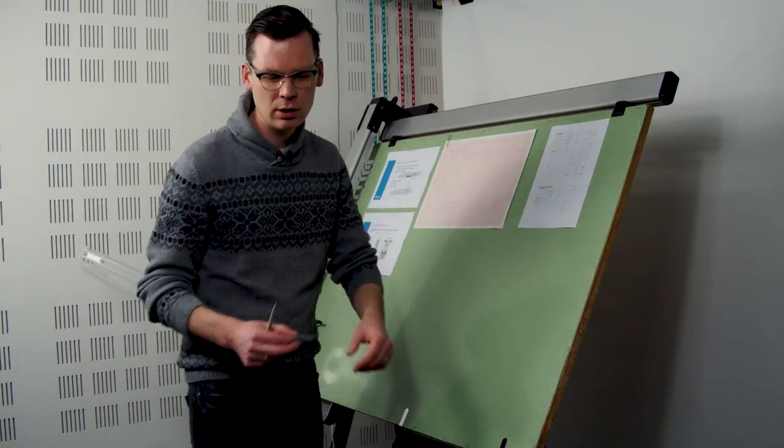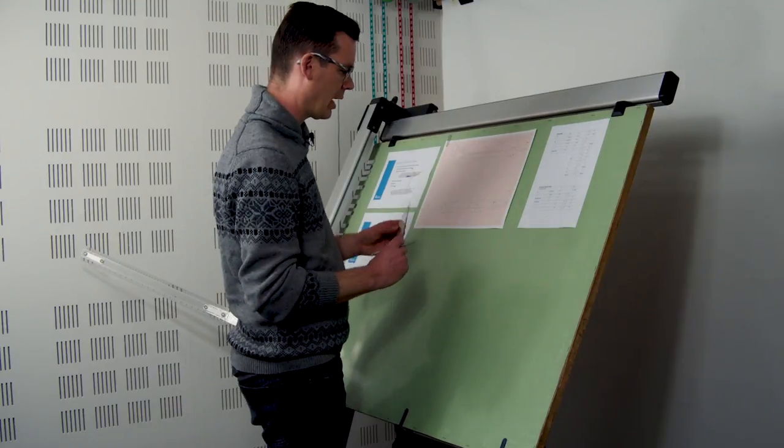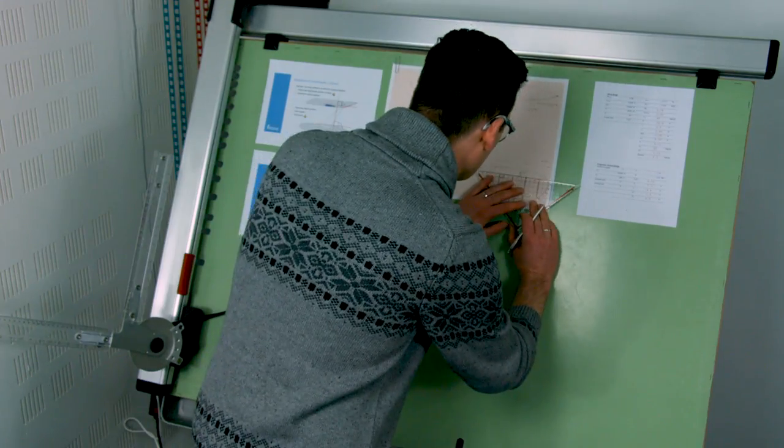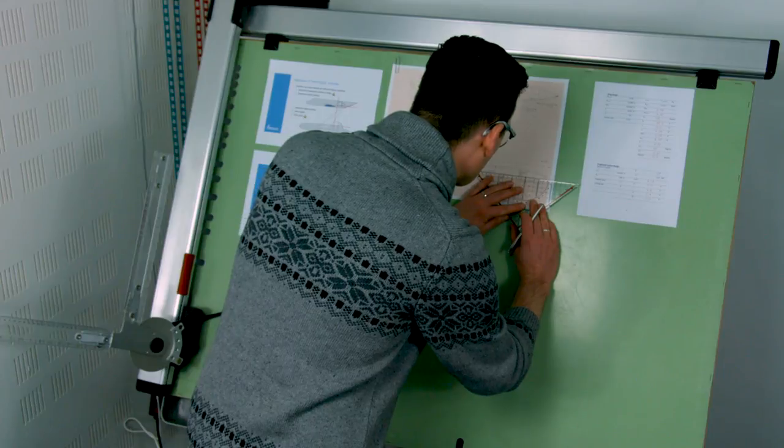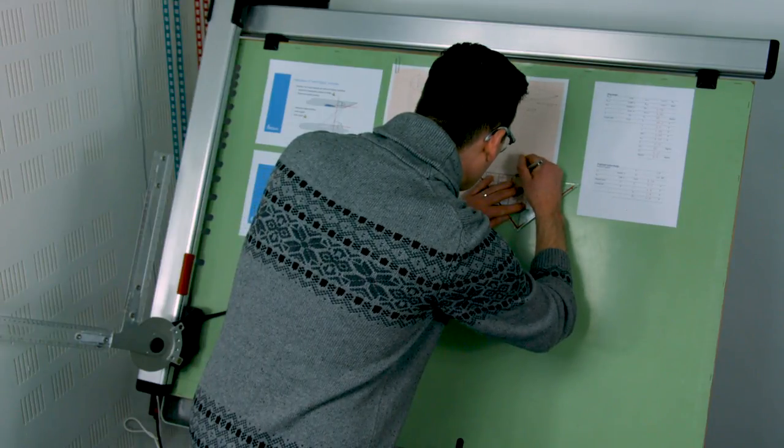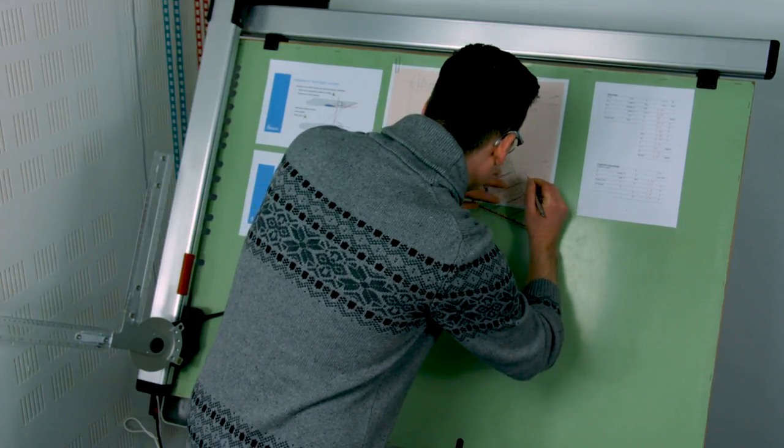Now let me draw that in to the drawing first of all in the side view. So measuring 2.4, that gives me about here.